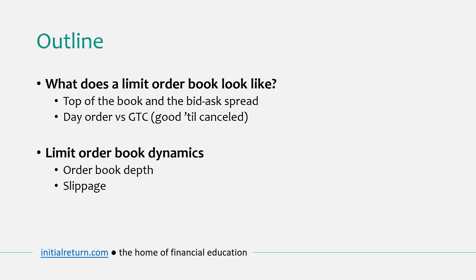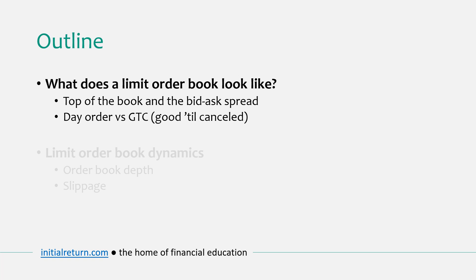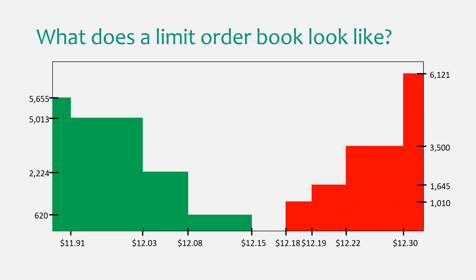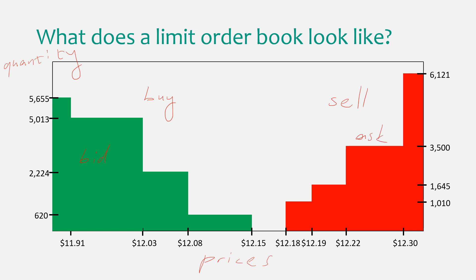Let's get started with the first part: what does a limit order book look like? It looks a bit like this. This is the order book for a hypothetical stock. We have prices on the horizontal axis and quantity on the vertical axis. We have the buy side of the market on the left and the sell side on the right. These are all limit orders — the ones on the left are called bid orders and the ones on the right are called ask orders, sometimes also called offer.